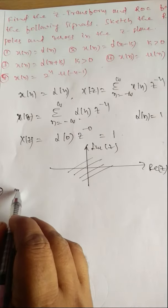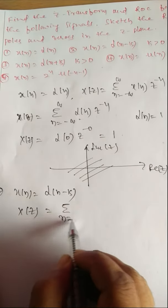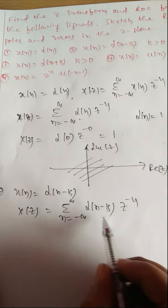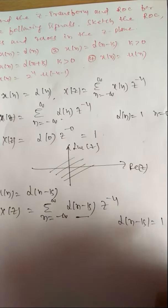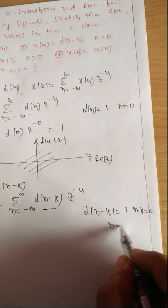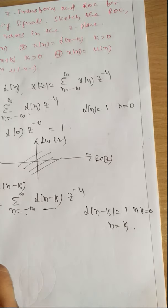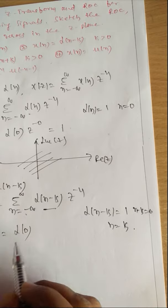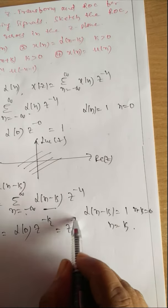Second problem: X(n) = δ(n-k). Its Z-transform is X(z) = summation from n = -∞ to +∞ of δ(n-k) · Z^(-n). As per the definition of the impulse function, δ(n-k) = 1 when n-k = 0, that is, when n = k. It exists at only one value of n, namely n = k. So when n = k, X(z) = δ(0) · Z^(-k) = Z^(-k).